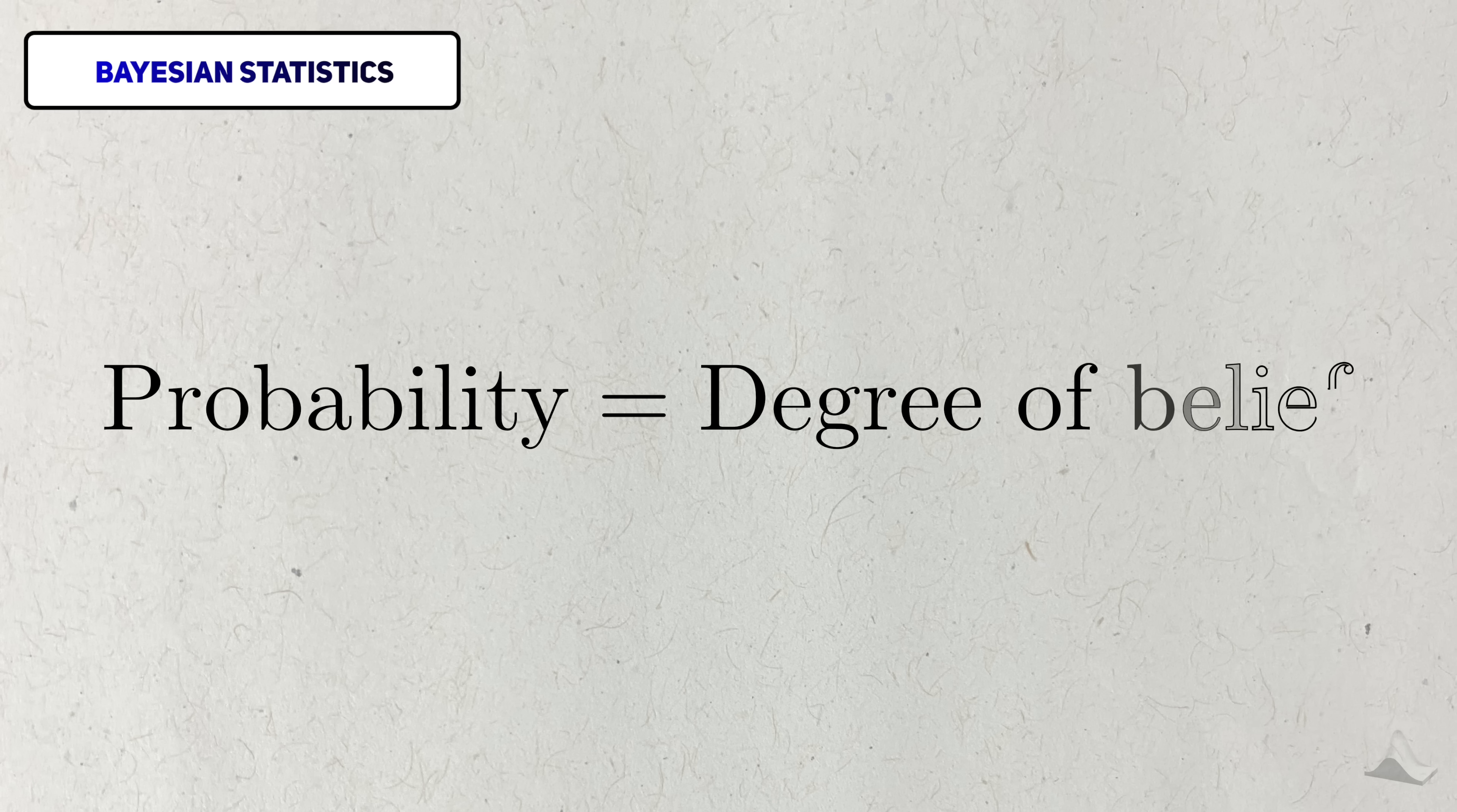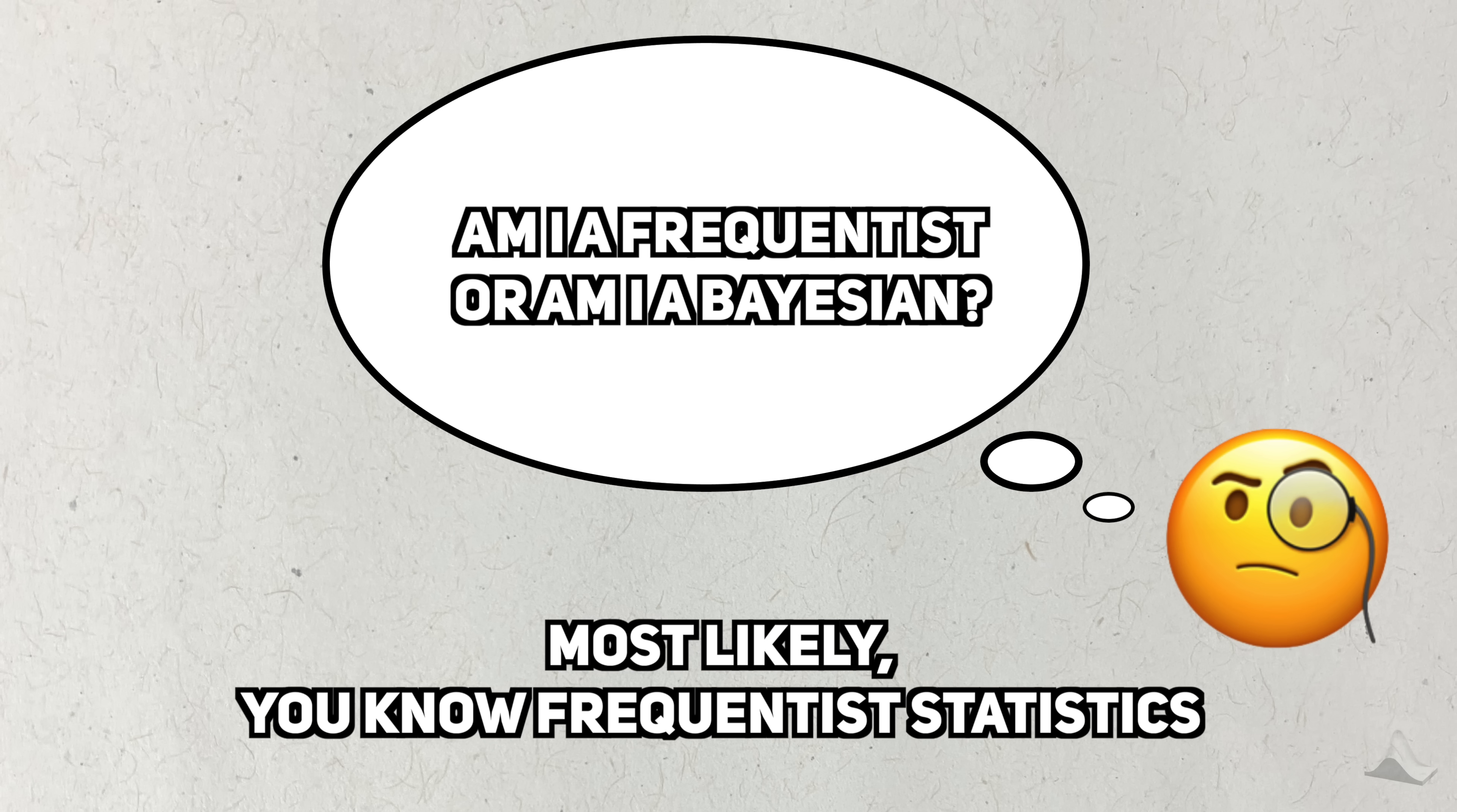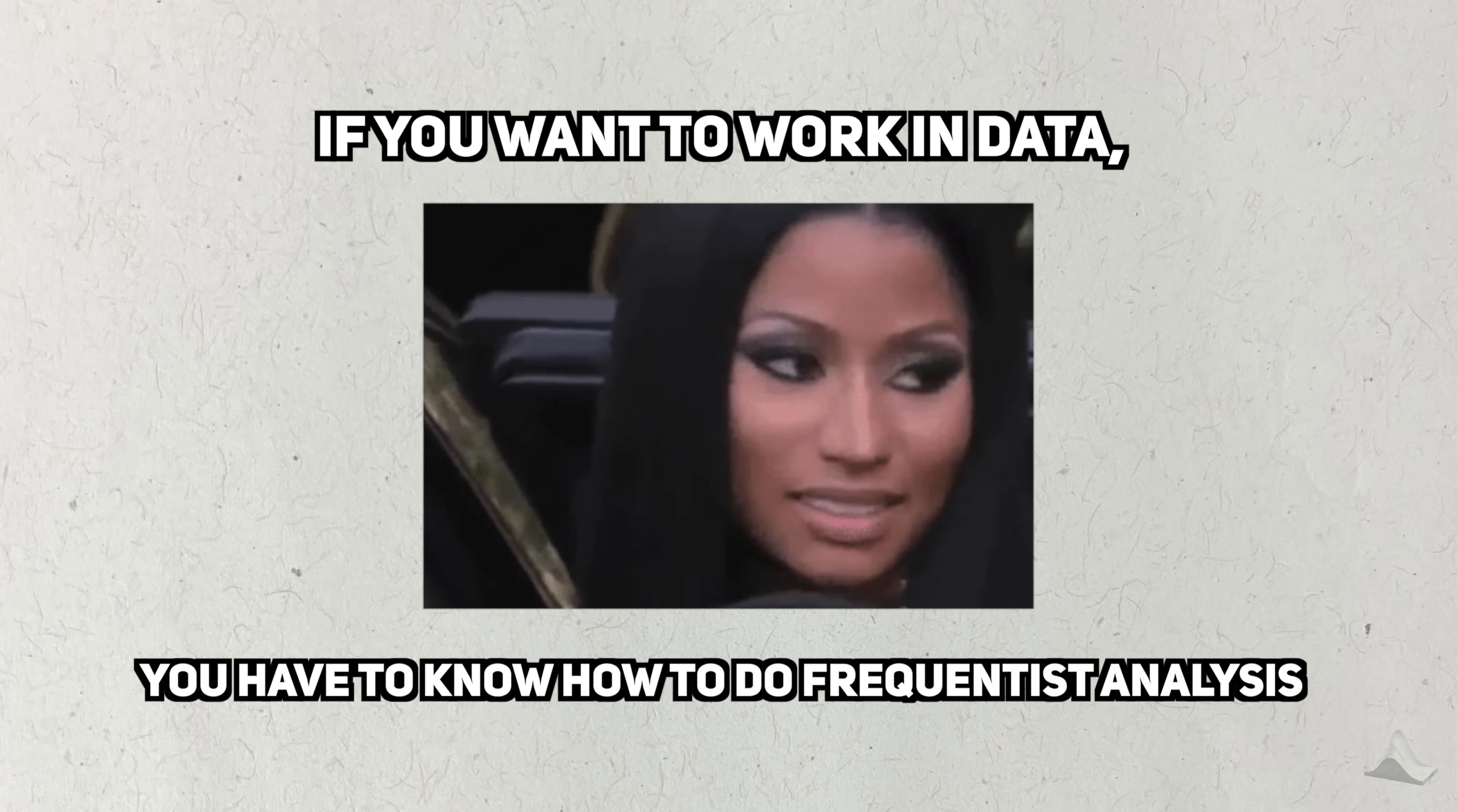From the Bayesian perspective, probability represents a degree of belief about an event, and its degree can change based on a person's prior knowledge. If you've learned statistics before, or have watched my past videos, then most likely you've learned frequentist statistics. Whether we like it or not, it's the dominant form of statistics taught in schools, and anybody who wants to work with data has to know how to do it.